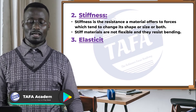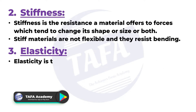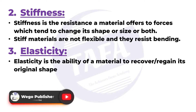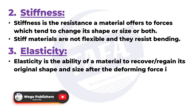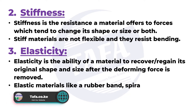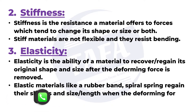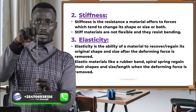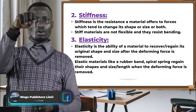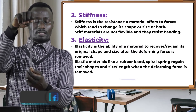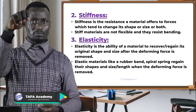Another property is elasticity. Elasticity is the ability of a material to recover or regain its original shape and size after the deforming force is removed. Elastic materials like a rubber band or a spiral spring regain their original shapes and size or length when the deforming force is removed. Here we have a spiral spring — when I stretch this spring and release it, it goes back to its original size, so a spiral spring is an elastic material.